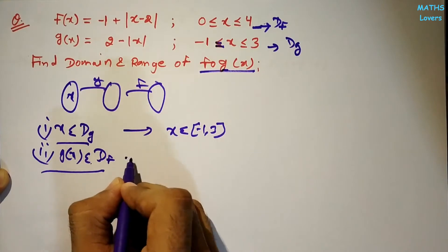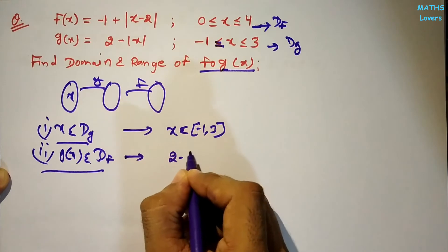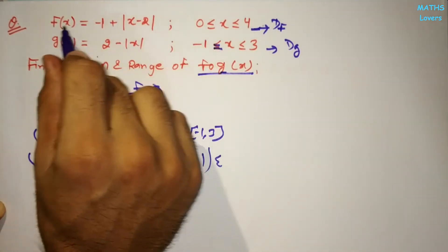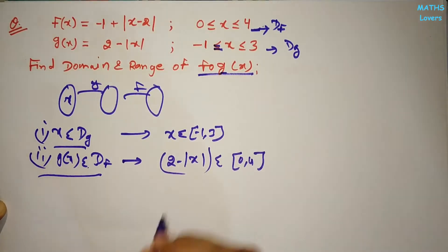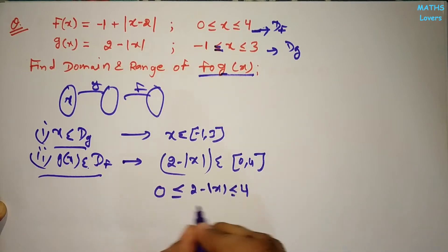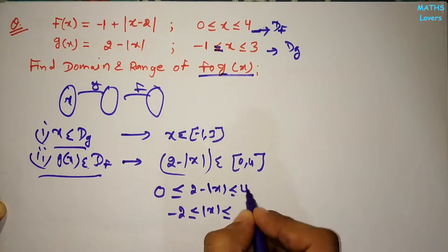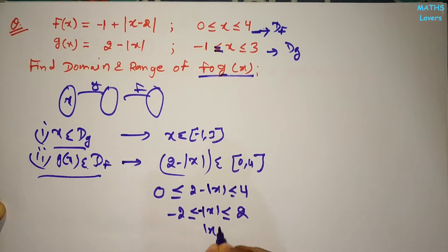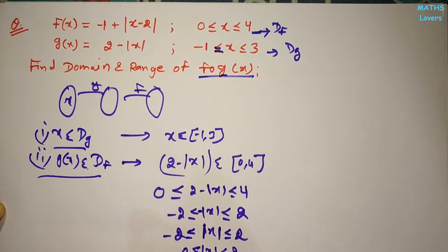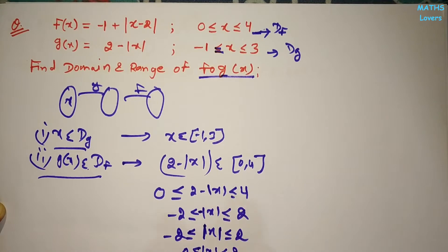The second condition: g(x) should belong to the domain of f, which is [0, 4]. So 2 - |x| must satisfy 0 ≤ 2 - |x| ≤ 4. Rearranging, we get -2 ≤ |x| - 2 ≤ 2 (with sign change). Since the minimum value of |x| is 0, we get |x| ≤ 2, giving x ∈ [-2, 2].